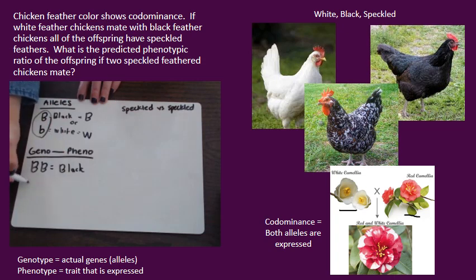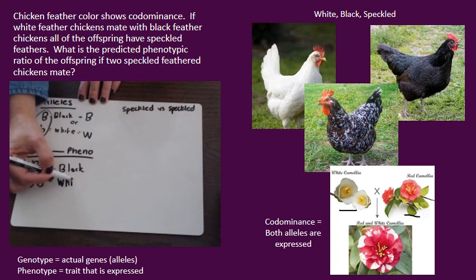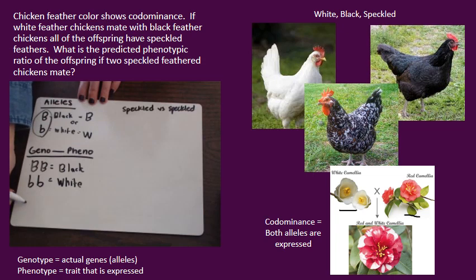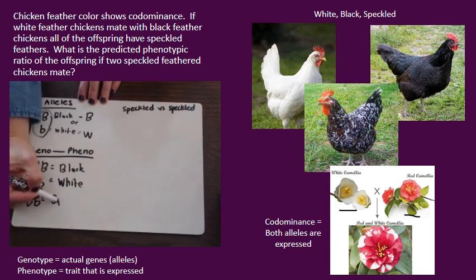We would also have lowercase b, lowercase b, which would represent white feathers — homozygous recessive in this case, though really there's no true dominant-recessive relationship in these types of problems. And then we would also have our heterozygote — capital B, lowercase b — which is where we get that speckled color, showing both white and black feathers.